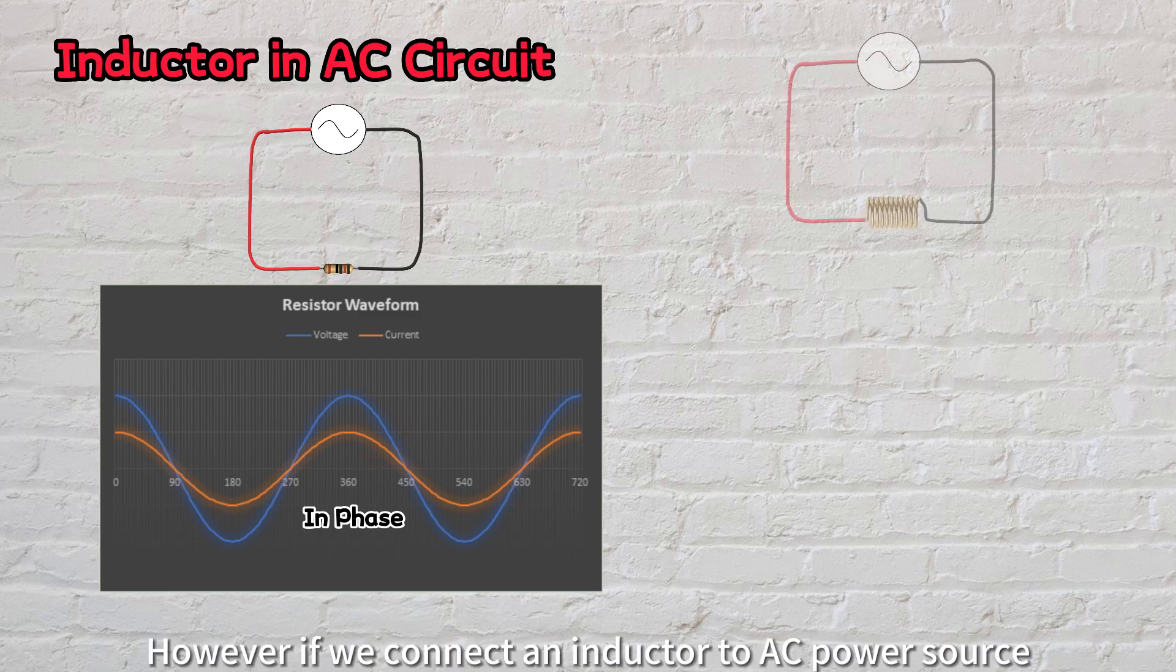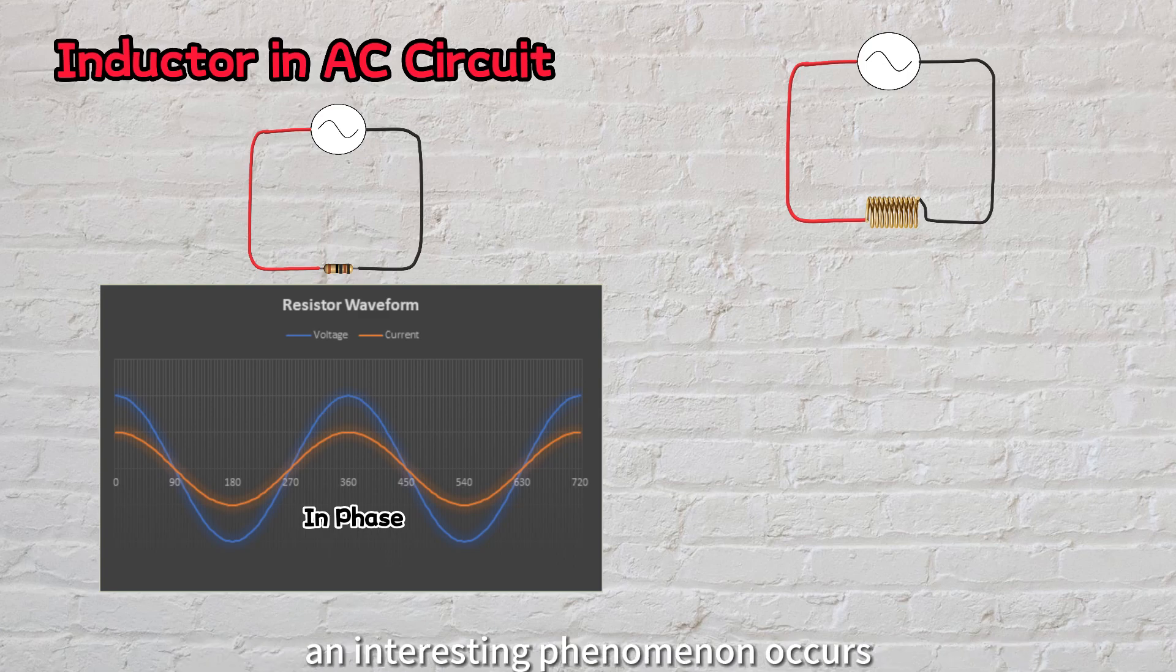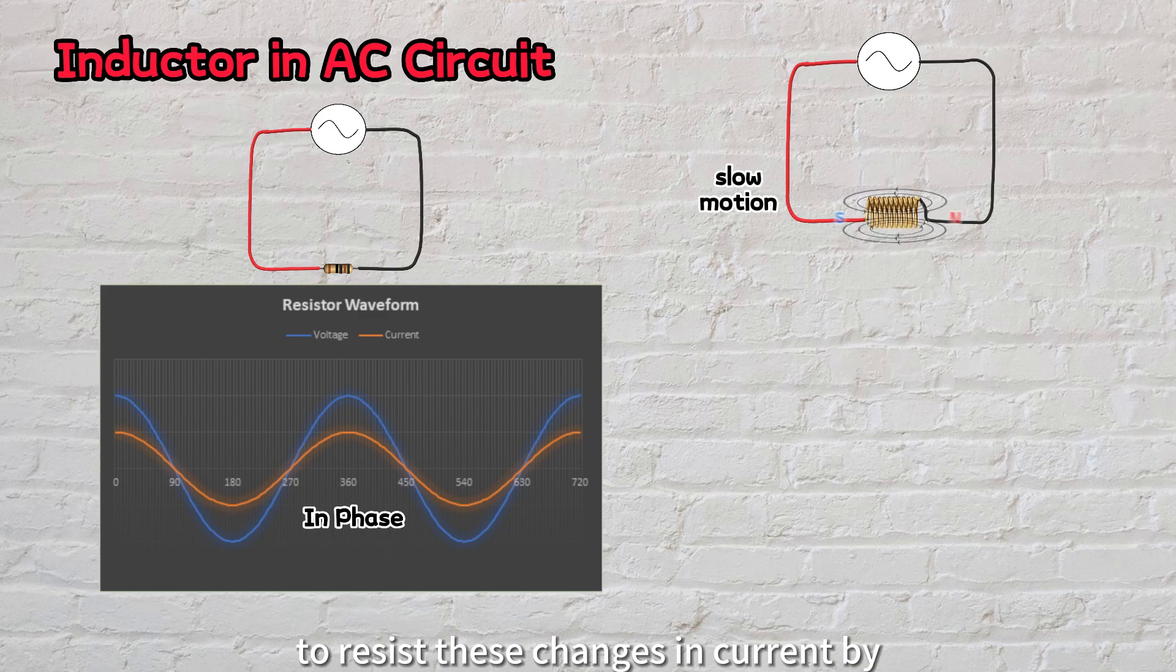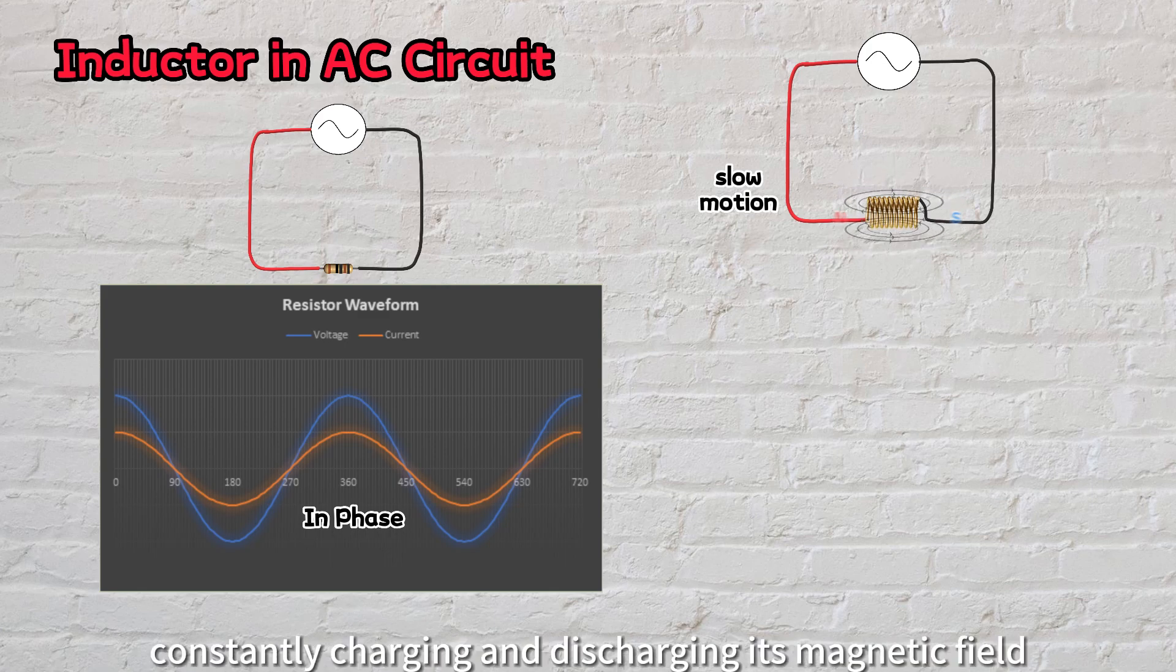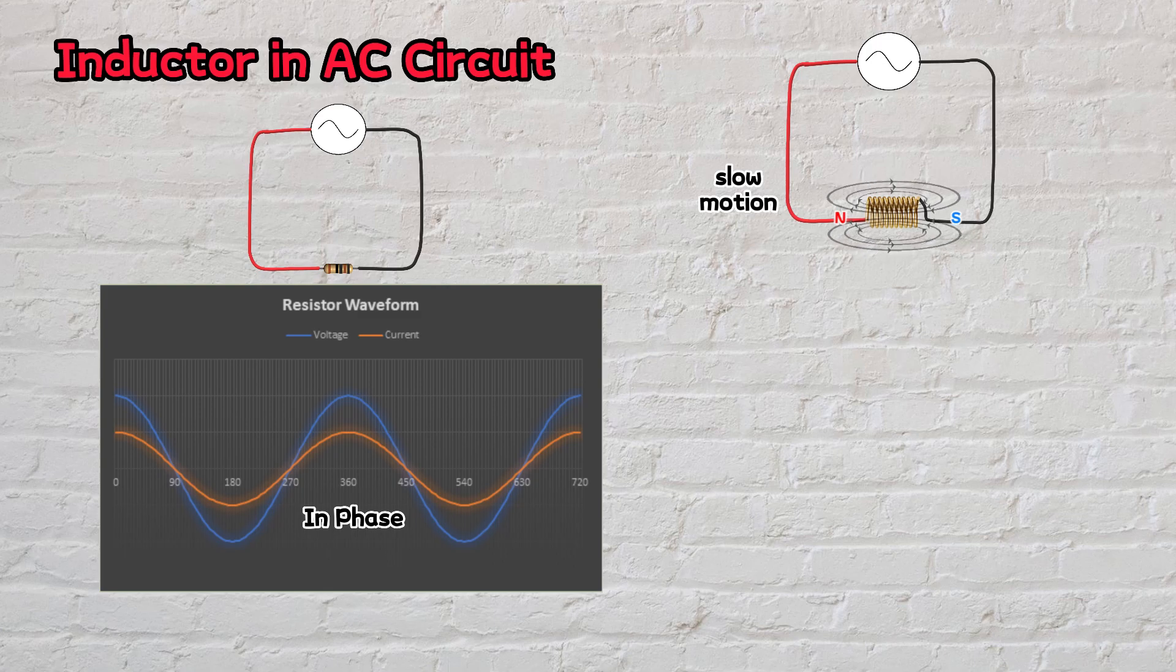However, if we connect an inductor to an AC power source, an interesting phenomenon occurs. The inductor will always try to resist these changes in current by constantly charging and discharging its magnetic field.